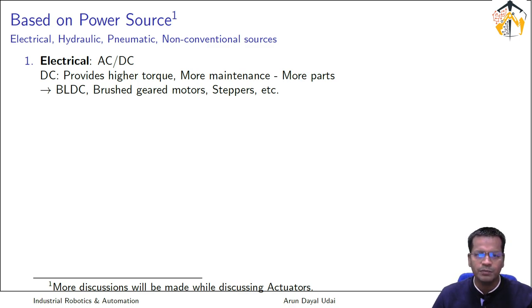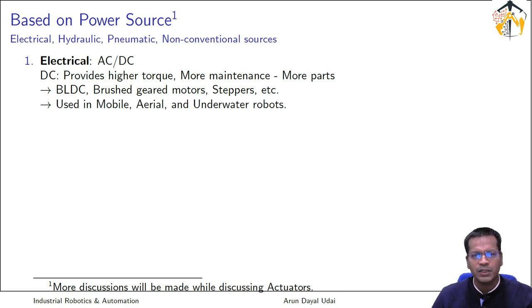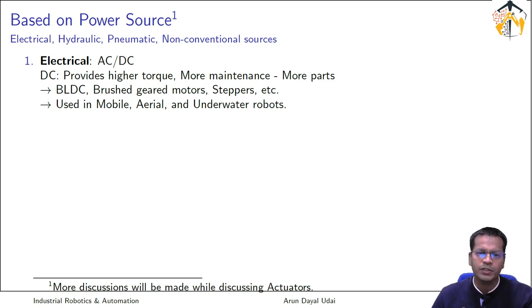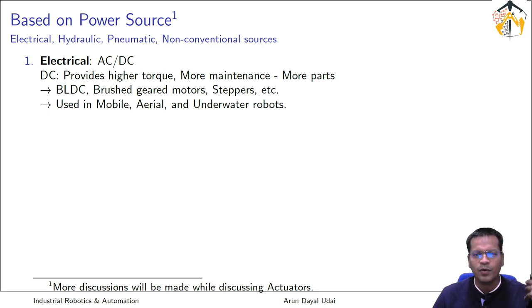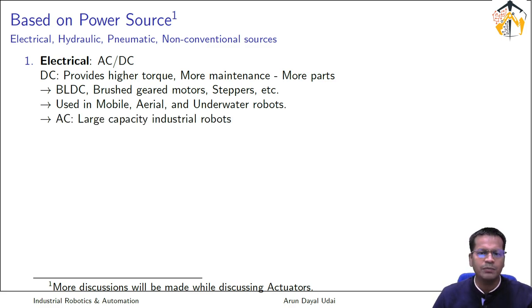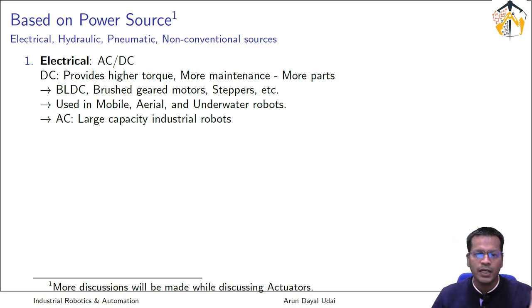Other types of DC motors include brushless DC motors — very common in aerial drones and electric vehicles — BLDC motors, brushed DC motors, and stepper motors. DC motor-powered robots are used in mobile robots that can move without being connected to a fixed power source, aerial robots, and underwater robots where you cannot have a wire running along with the robot. For AC motors, they are used in large-capacity industrial robots, which is the major focus of this course.